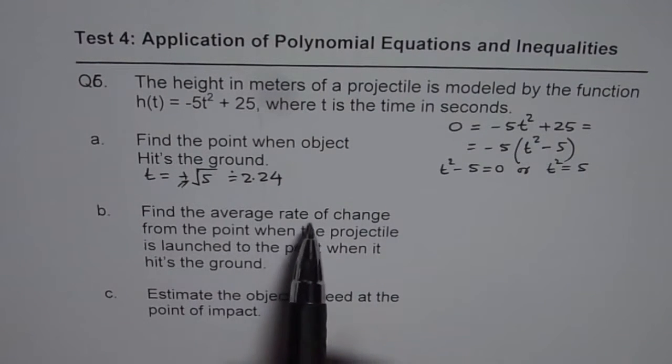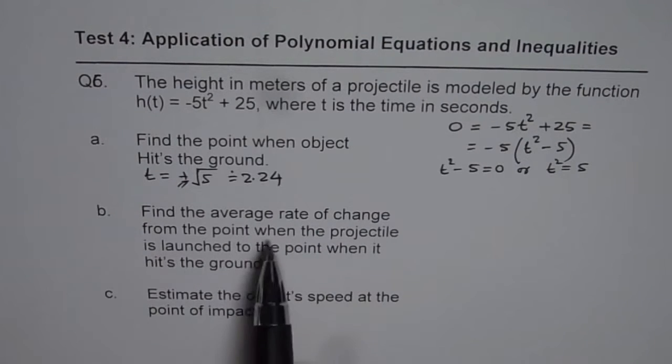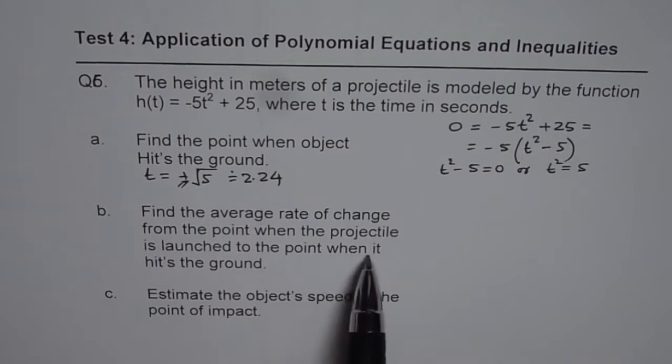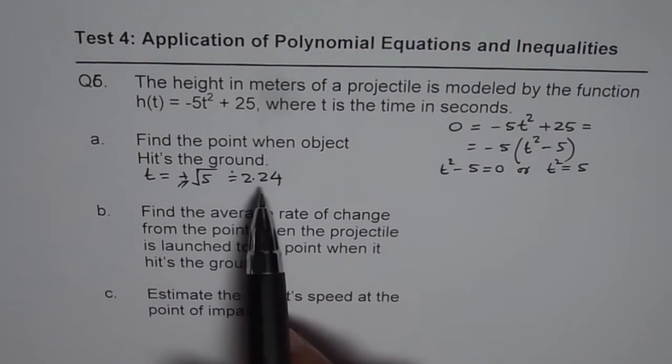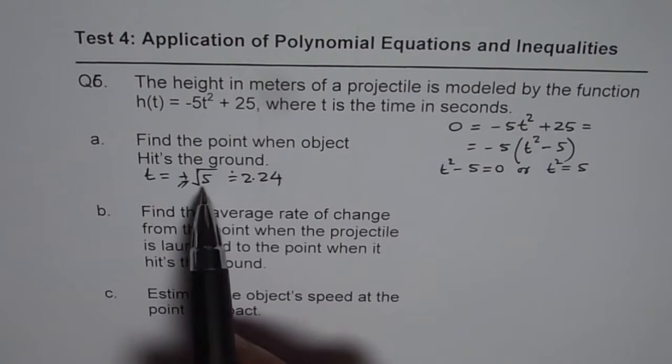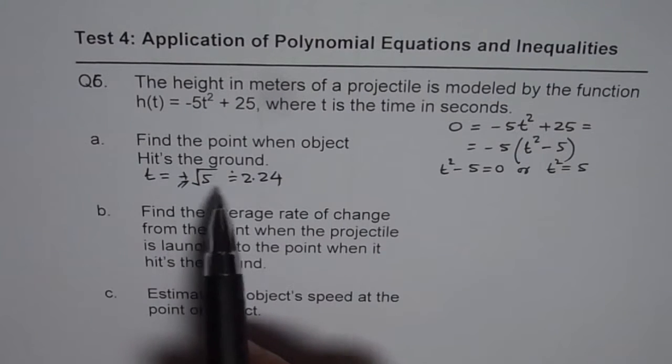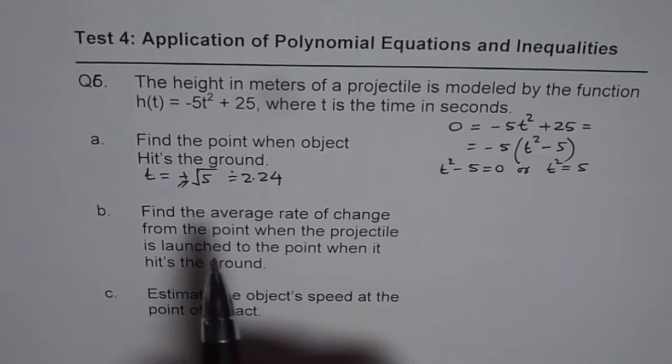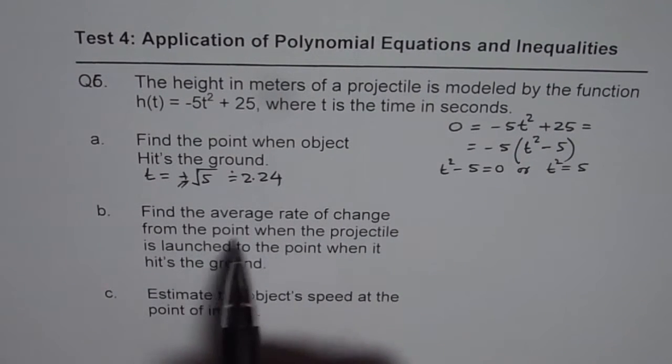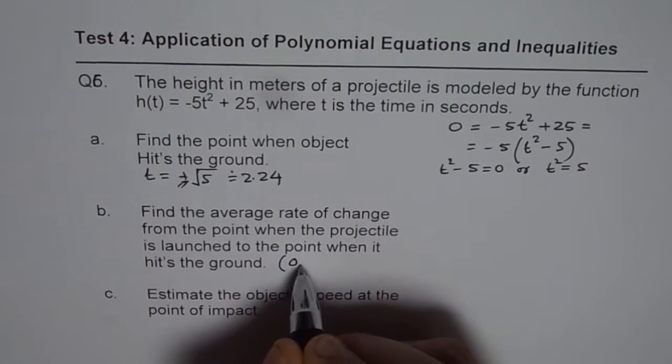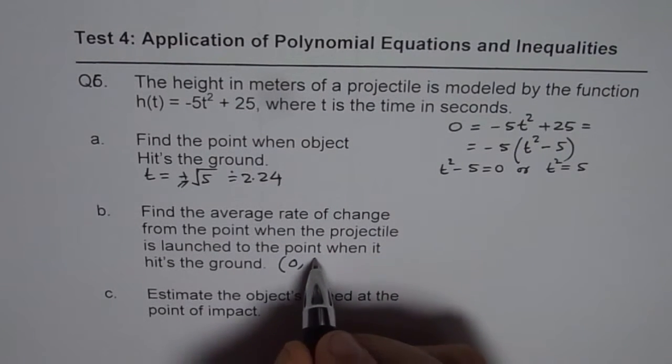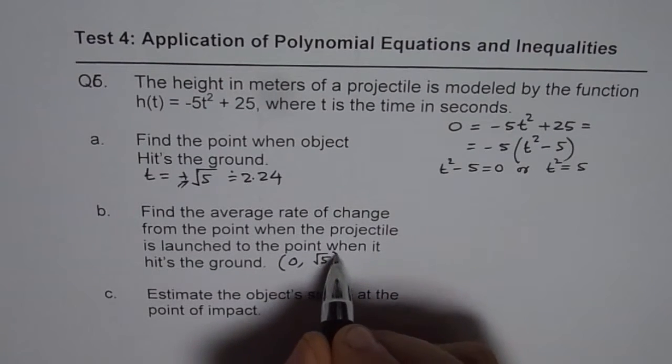Now, find the average rate of change from the point when the projectile is launched to the point when it hits the ground. So average rate of change, now that is the time when it hits the ground. You can also use square root of 5, which will actually give you accurate answers. So we will use square root of 5 instead of the decimal value. So average rate of change from the point when the projectile is launched, at that time t is 0. So we are actually trying to find average rate of change between t = 0 and when it hits the ground, which is t = √5.